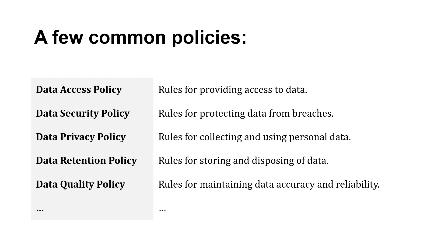Data security and privacy policies are rules for protecting data and for collecting and using someone's personal data. Then data retention — rules for storing and disposing of data, how do we handle that properly? And data quality policies — rules for maintaining data accuracy and reliability so we can trust it. These are policies that roll up into our data governance strategy.